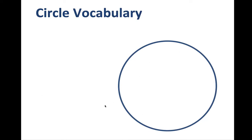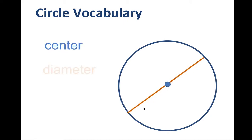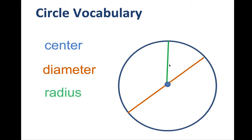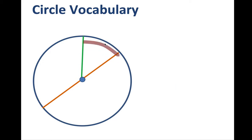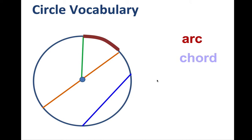Other circle vocabulary you should know: that is the center. This here is called the diameter — it is a chord, but it's a chord that passes through the center. We have the radius. A portion of the circumference of a circle is called an arc. This here is a chord — that's what we've been talking about. And this here is a line.